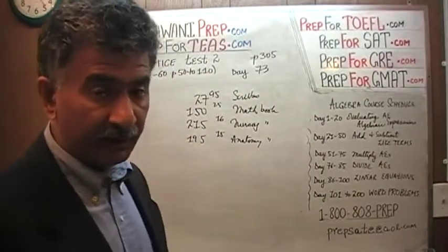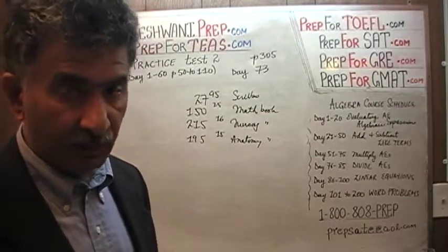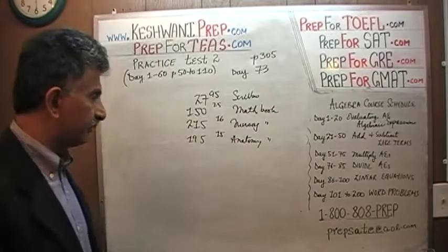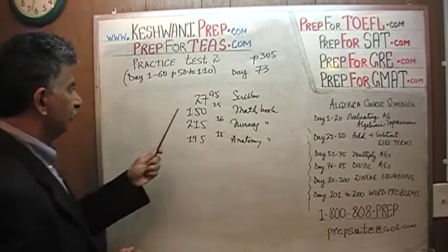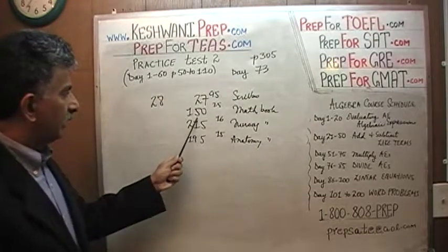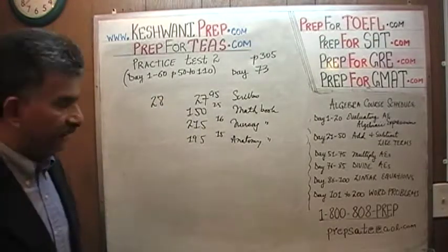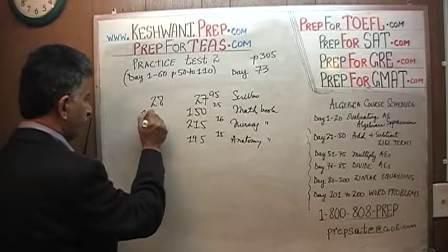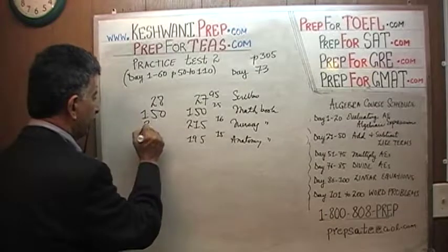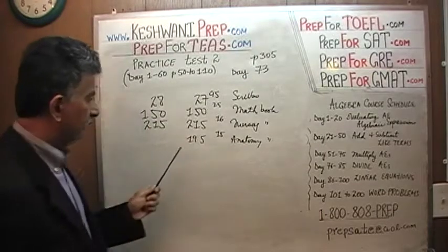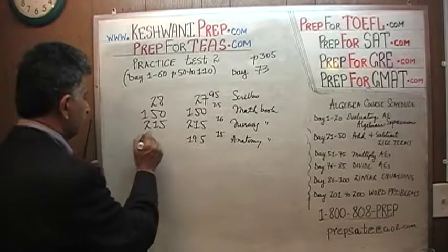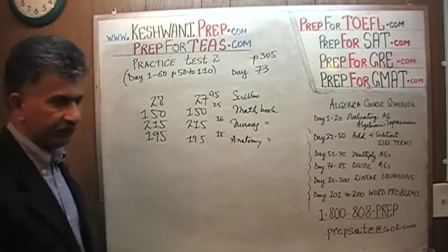We would have estimated anyway, because trying to figure out the exact answer takes too much time. So scrubs at $27.95 — we are going to pretend it is $28. $150.25 for the math book, which we are going to round to $150 even. $215.16 for the nursing book, let's round it to $215 even. And $195.15 for the anatomy book, which we'll keep as $195.